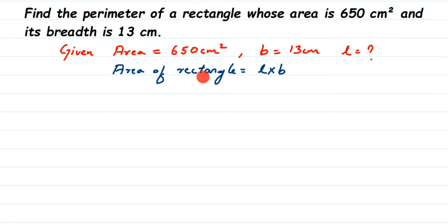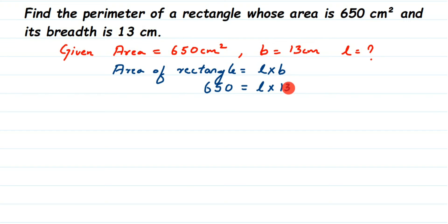We know the area of the rectangle is 650, so substitute that value: 650 is equal to length multiplied by breadth, which is 13. I'm not writing the units now — I'll write them at the end. We want only the length value, so we transpose 13 to the other side.